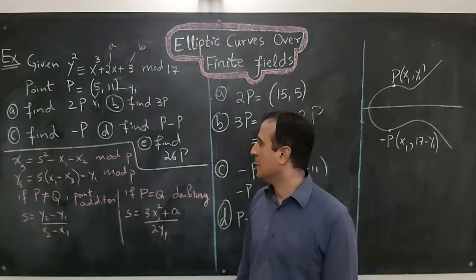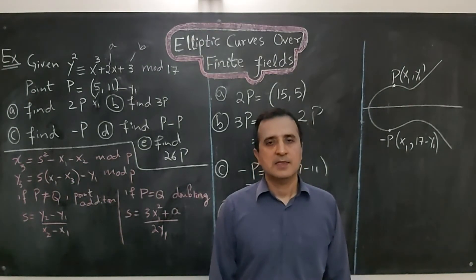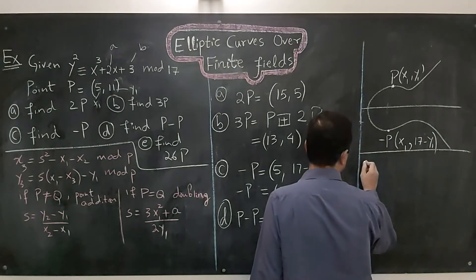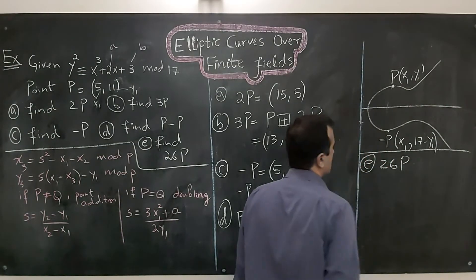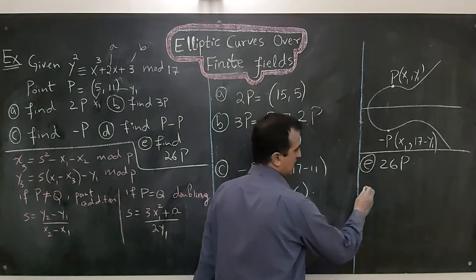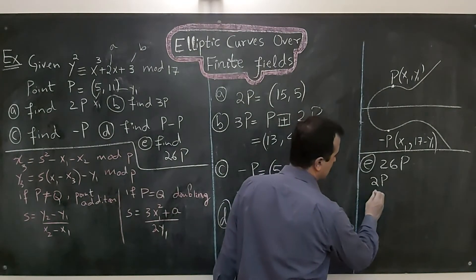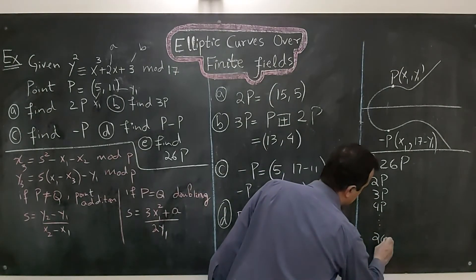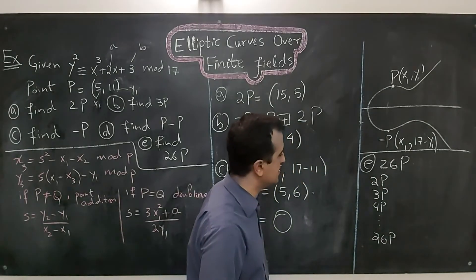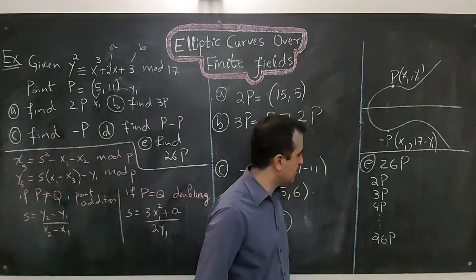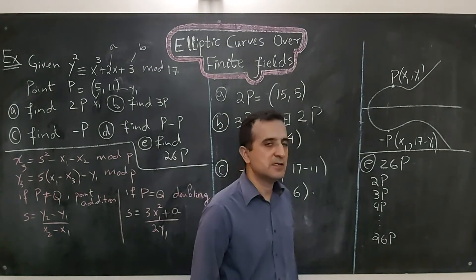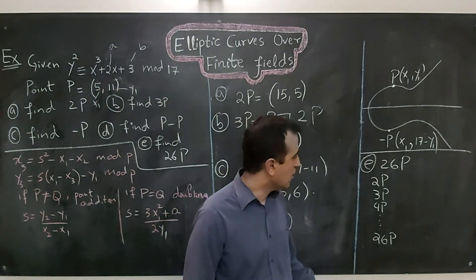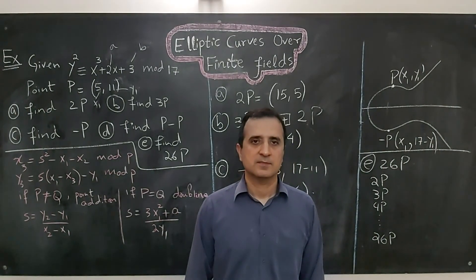Now let's do part (e): find 26P. One approach is to compute 2P, then 3P, then 4P, and so on up to 26P, but that would take about 25 computations and a very long time. We have a better solution called the double-and-add algorithm. In the next video we'll solve this problem using the double-and-add algorithm, so stay tuned.